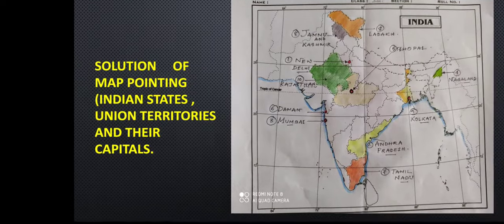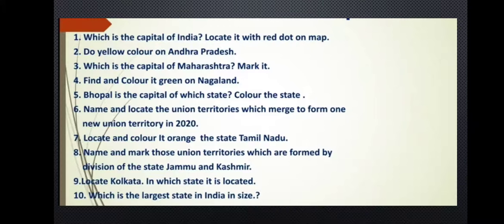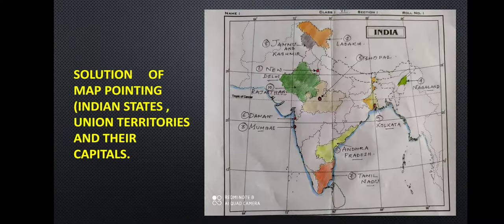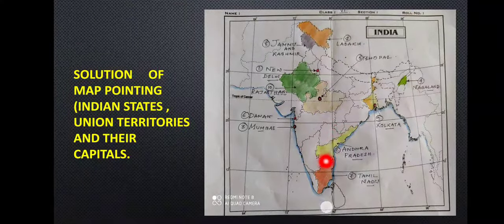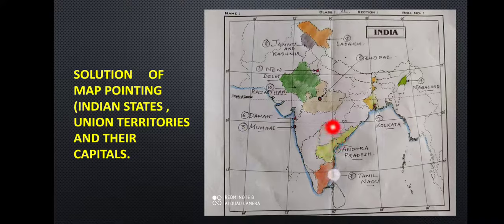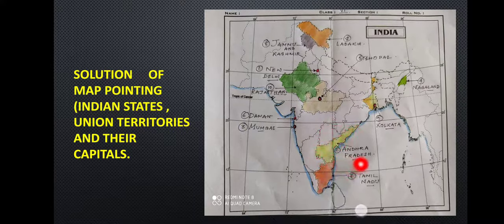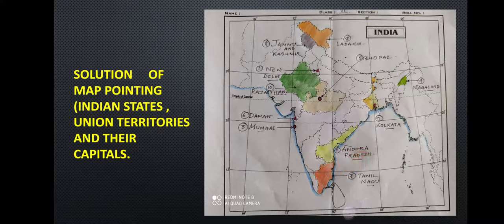The next question: do yellow color on Andhra Pradesh. So on Andhra Pradesh you have to color it in yellow. Previously the entire state was Andhra Pradesh, but it has been divided now into two parts — this one is Telangana, and this area which I have marked with yellow color is Andhra Pradesh. I have given it number two.